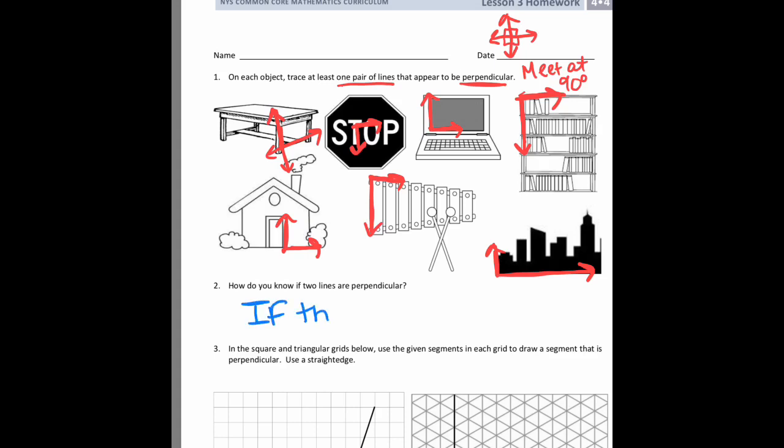The second part says, how do you know if two lines are perpendicular? And we know they're perpendicular if they meet at a 90 degree angle, or right angle.